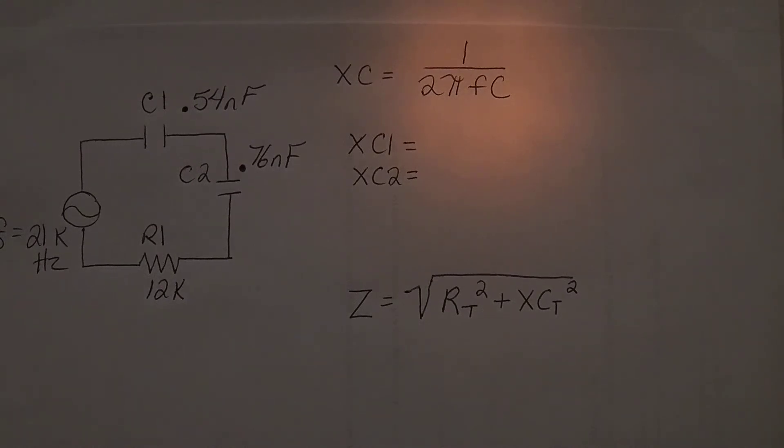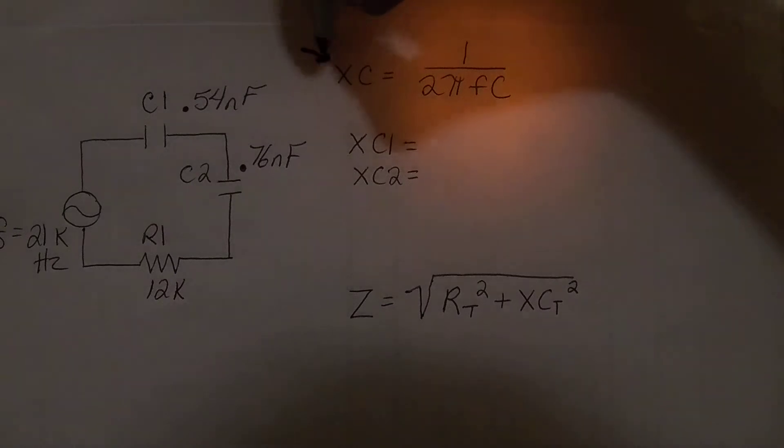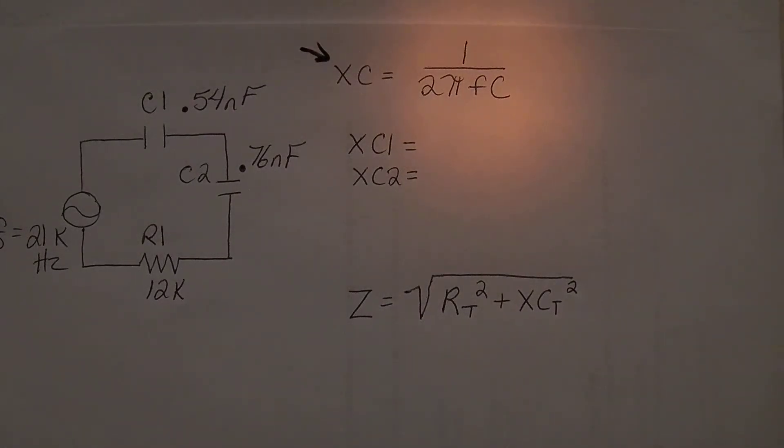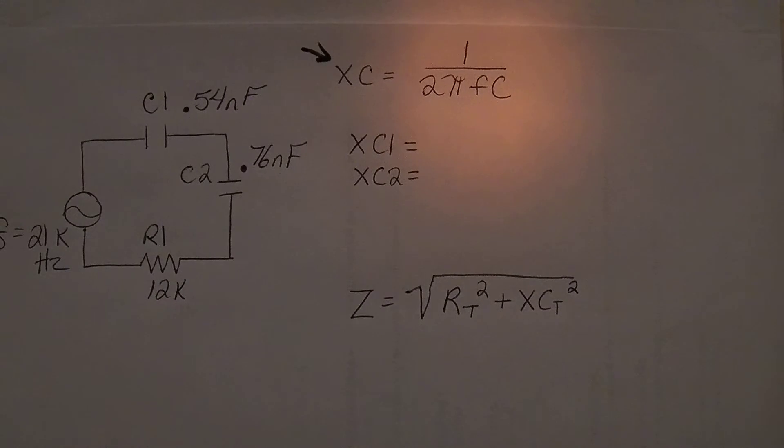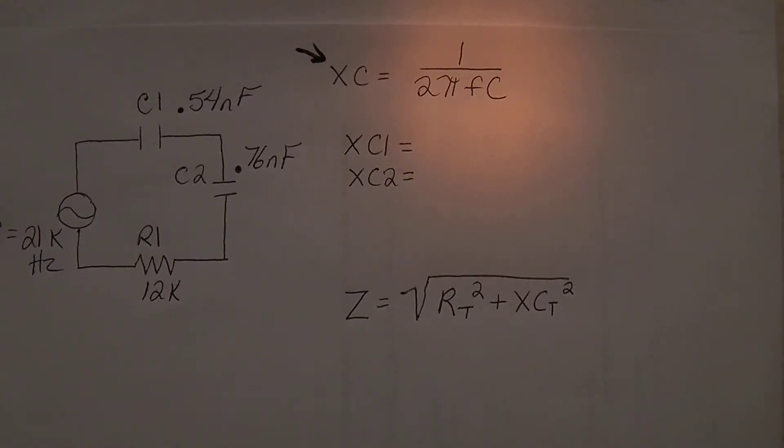So what you want to start with first is to convert your two capacitors into their ohmic values or into capacitive reactance. So you'll start with your XC formula right up here. It's your XC formula, and then you are going to take your calculator and input the information.